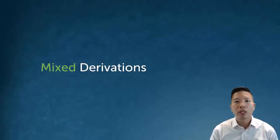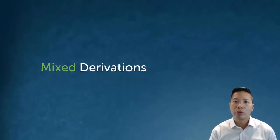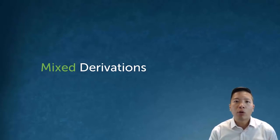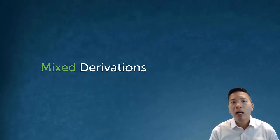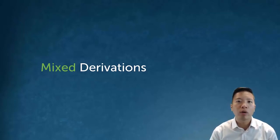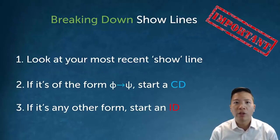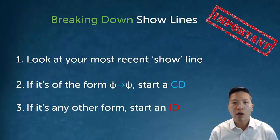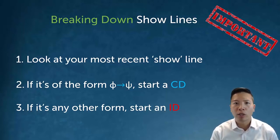A really common question in the course is: how do I know ahead of time whether I should do a direct derivation, a conditional derivation, or an indirect derivation? And actually the answer is it turns out it doesn't matter. We are always allowed to start a derivation however we want and then finish it in a totally different way — our system allows for mixed derivations. What it means is that you can attack a derivation in a general way and just sort of wait and see what comes of it.